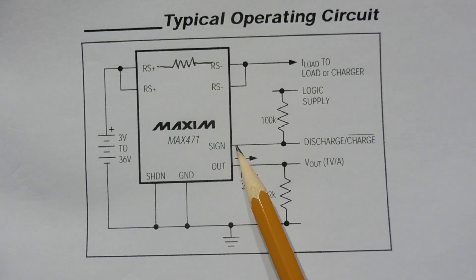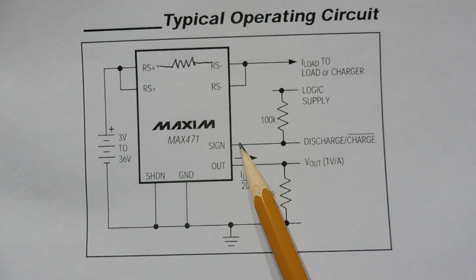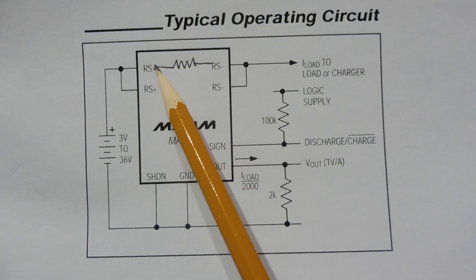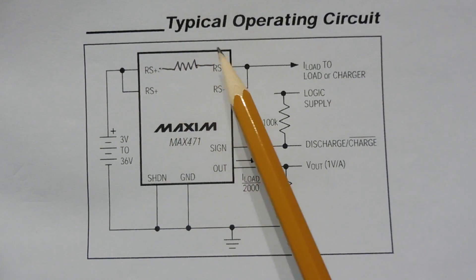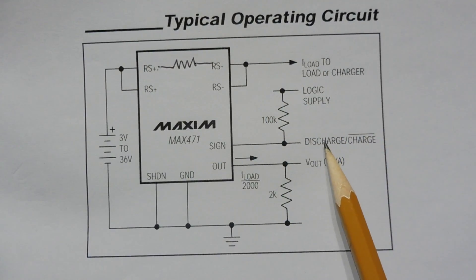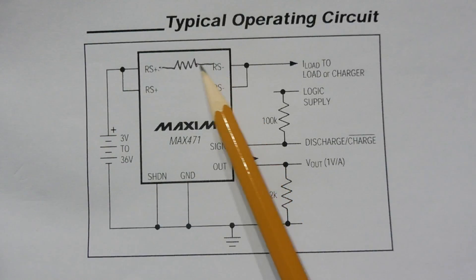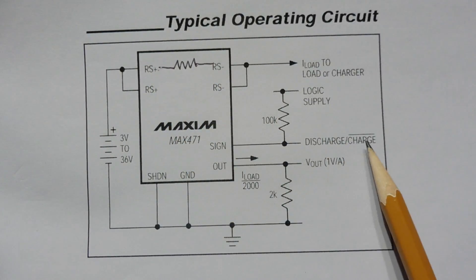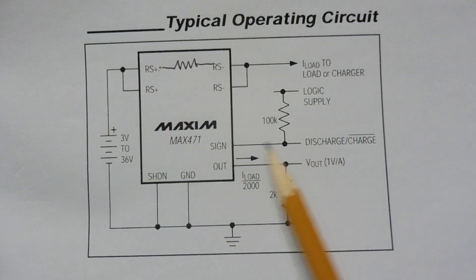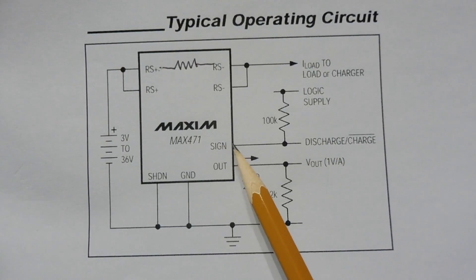Here's our sign output that indicates which way the current is flowing. If it's flowing from RS plus to RS minus, then the output will be high, saying it's in discharge mode. And if the current is flowing from RS minus to RS plus, then it's in charge mode and the output will go low. That's our sign - it'll actually tell us the direction of our current.